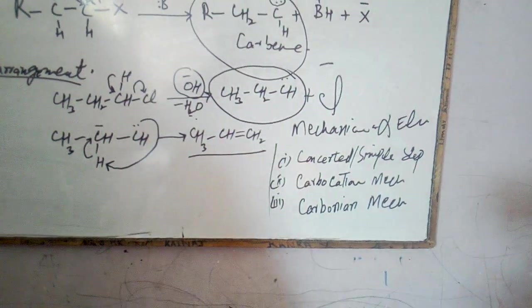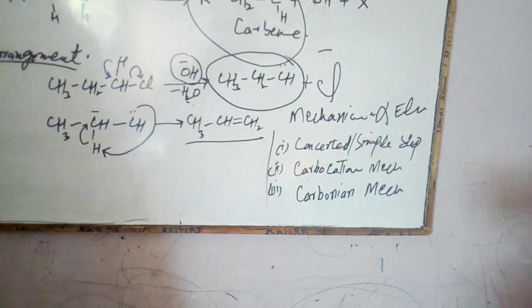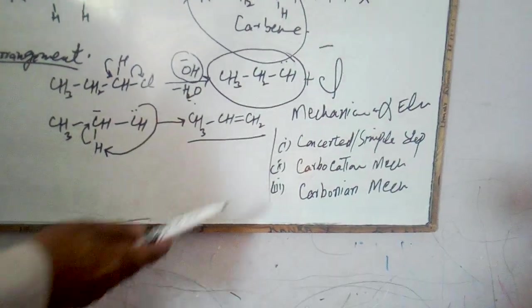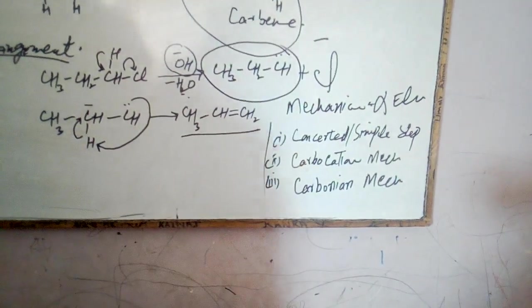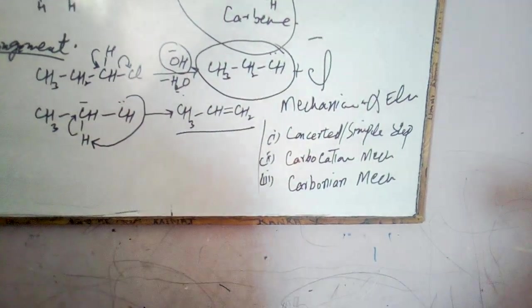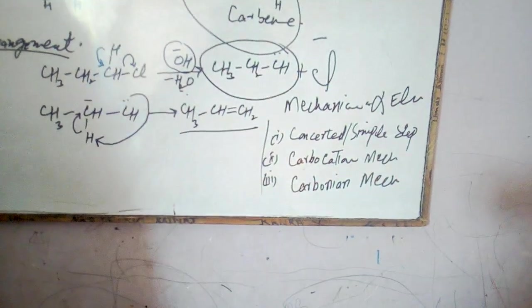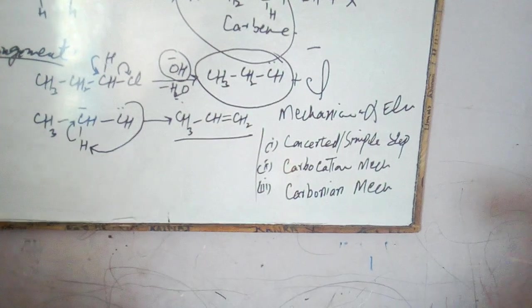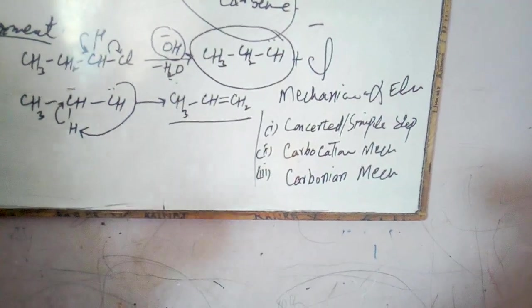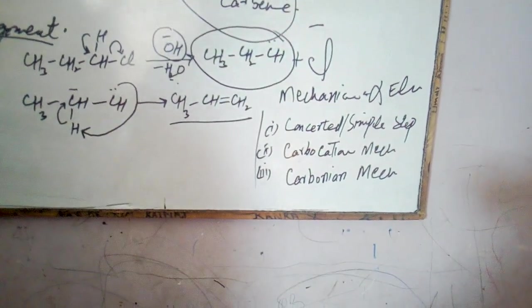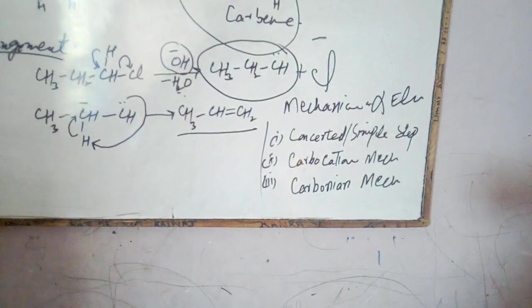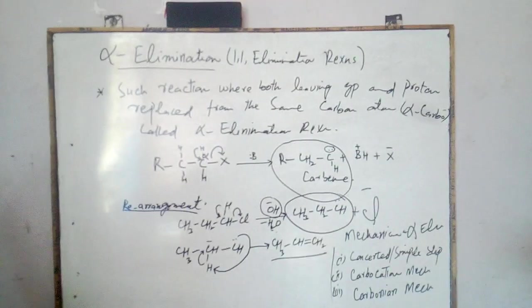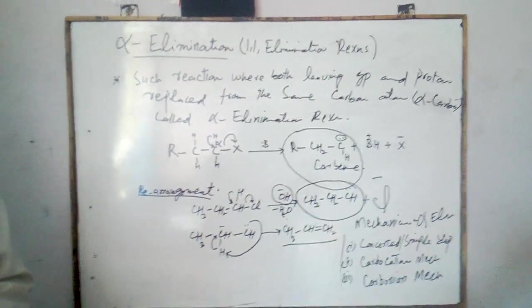I would like to give you information about the different kinds of mechanisms in alpha elimination reactions. We have three kinds of mechanisms: one is concerted or single-step mechanism, the second is carbocation intermediate mechanism, and the third is carbanion mechanism. These mechanisms will be discussed in the next video. Thank you so much.